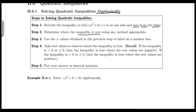Step two is to determine where the inequality is zero using any appropriate method. You have three methods: the first is factoring, the second is completing the square, and the third is using the quadratic formula. Factoring is usually your first option. Step three: use the x-values obtained to label them on the number line — those are the zeros you found in step two.